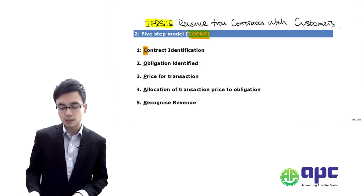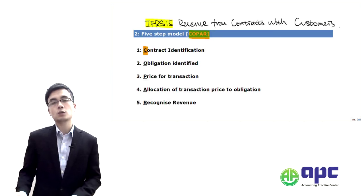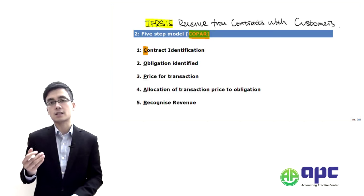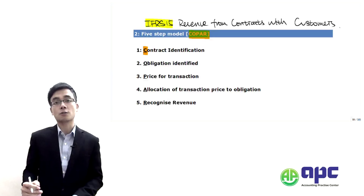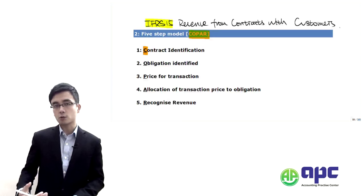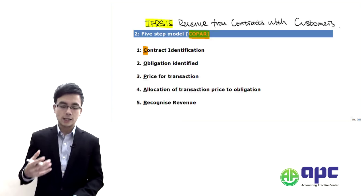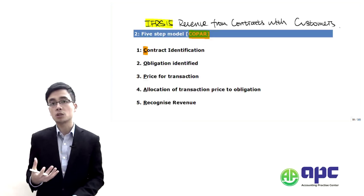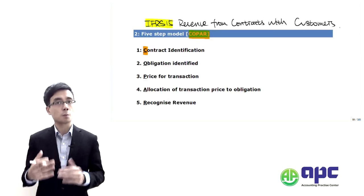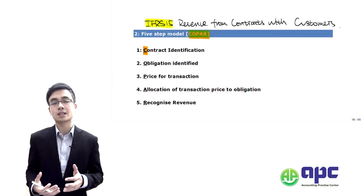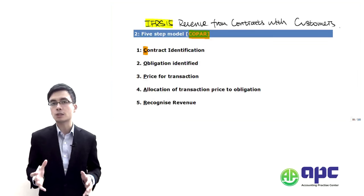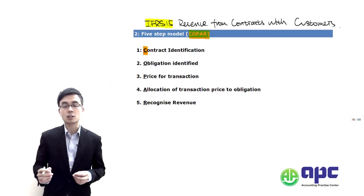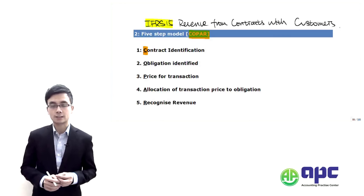First, you need to identify the contract, which means there are some characteristics defining the contract within IFAS number 15 that you have to watch out for. Any modification of the contract — meaning changes to the terms and conditions — needs to be dealt with appropriately under this new accounting standard.